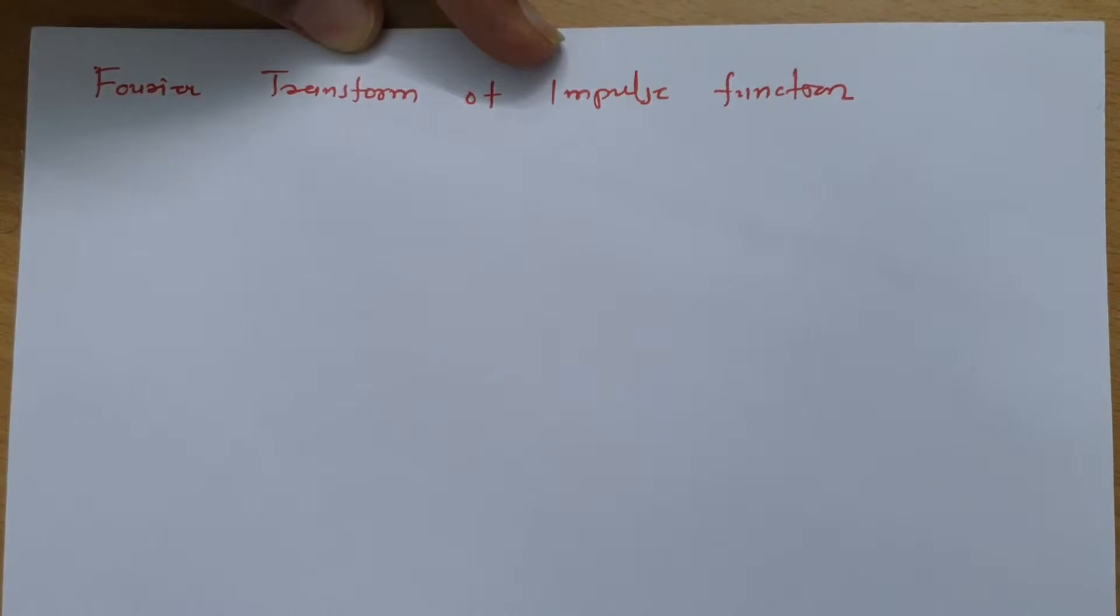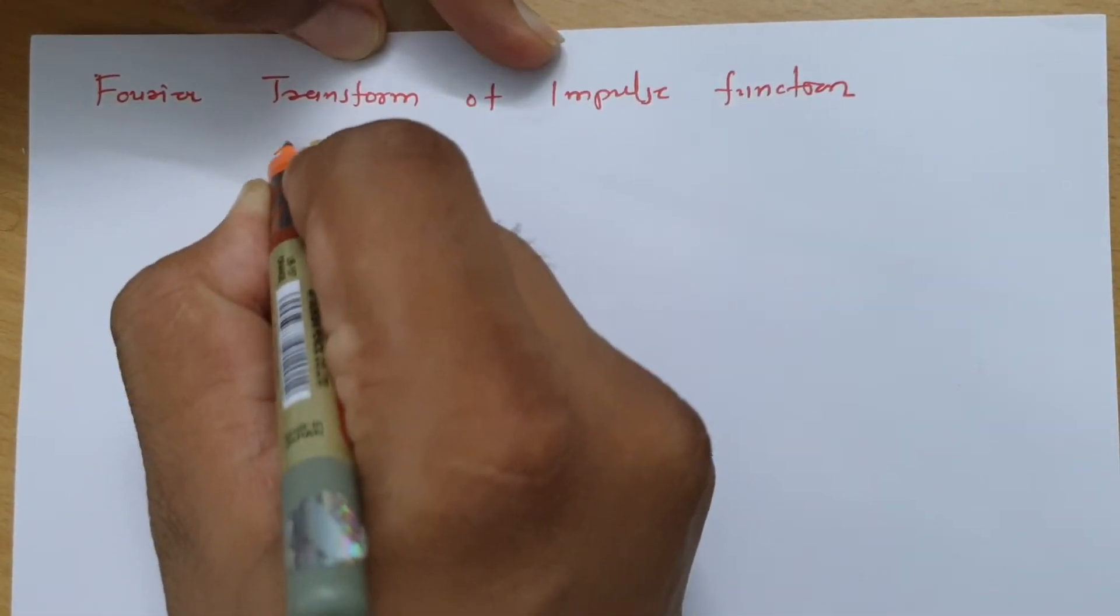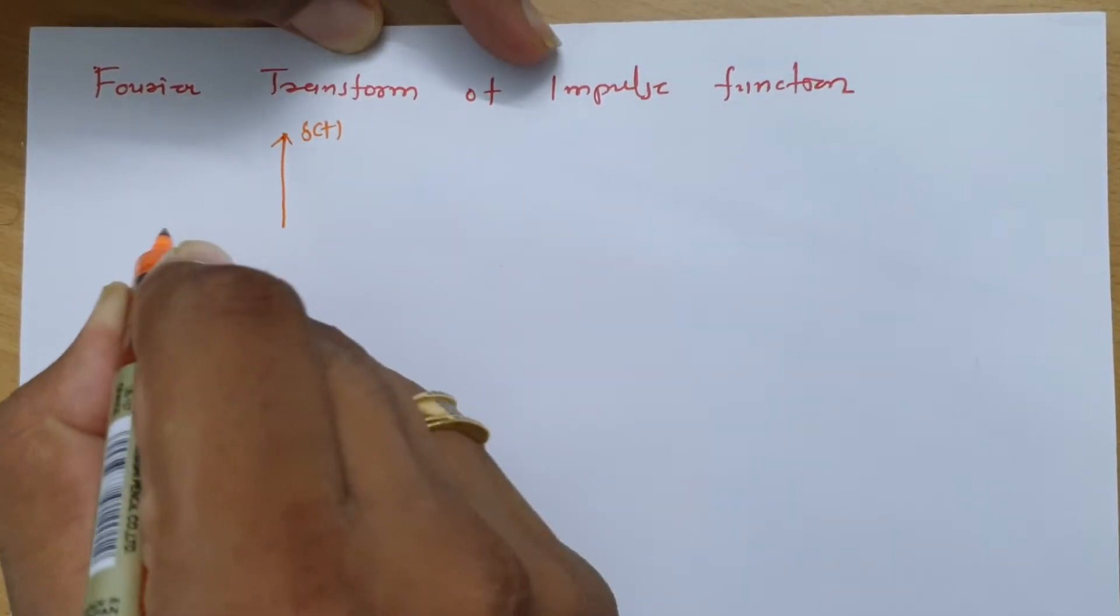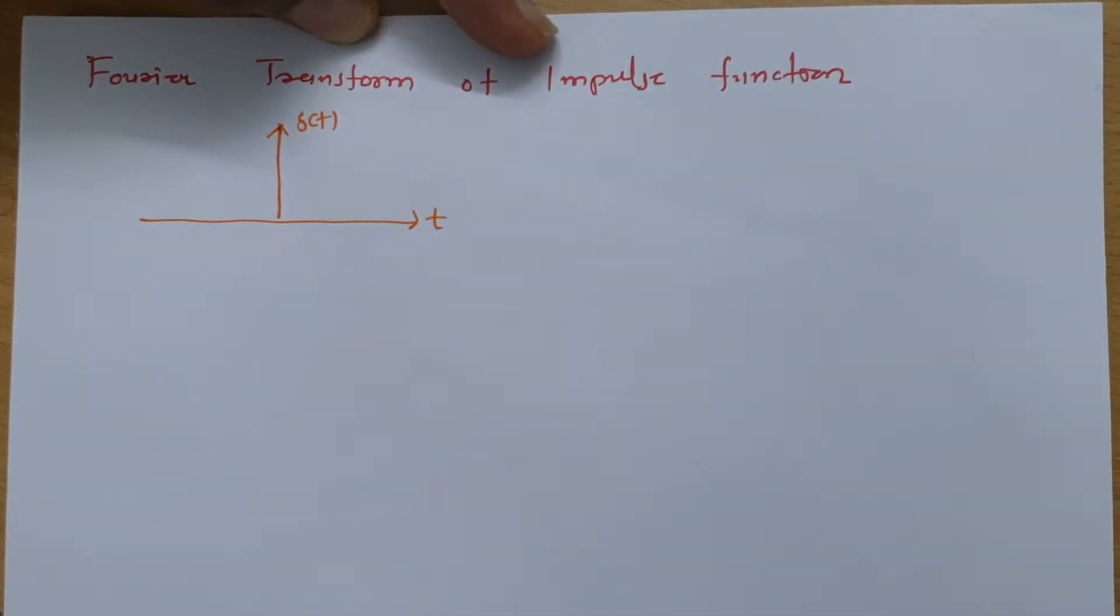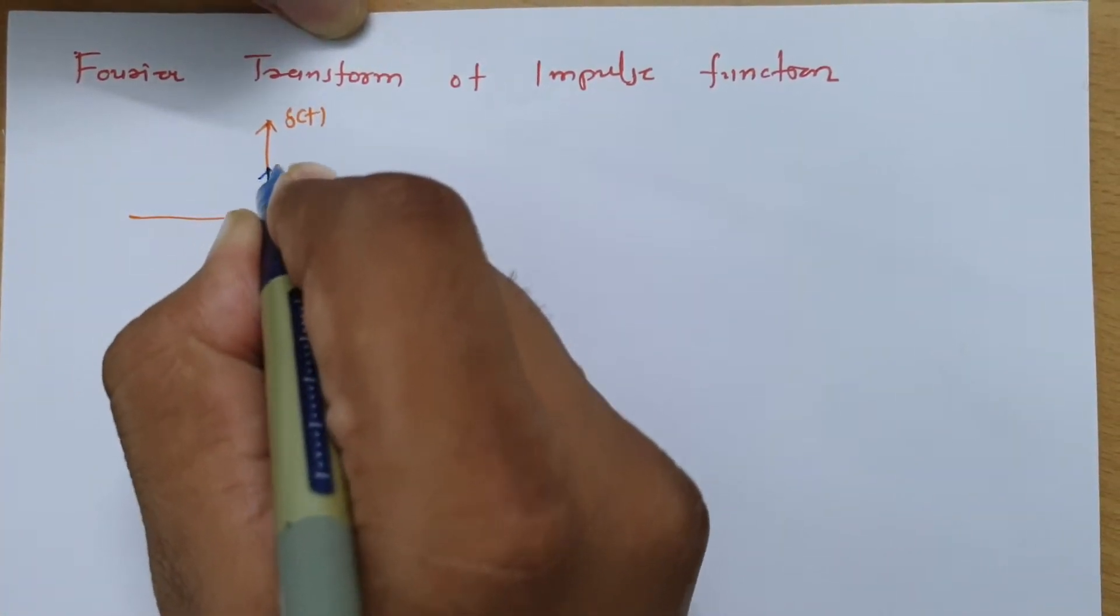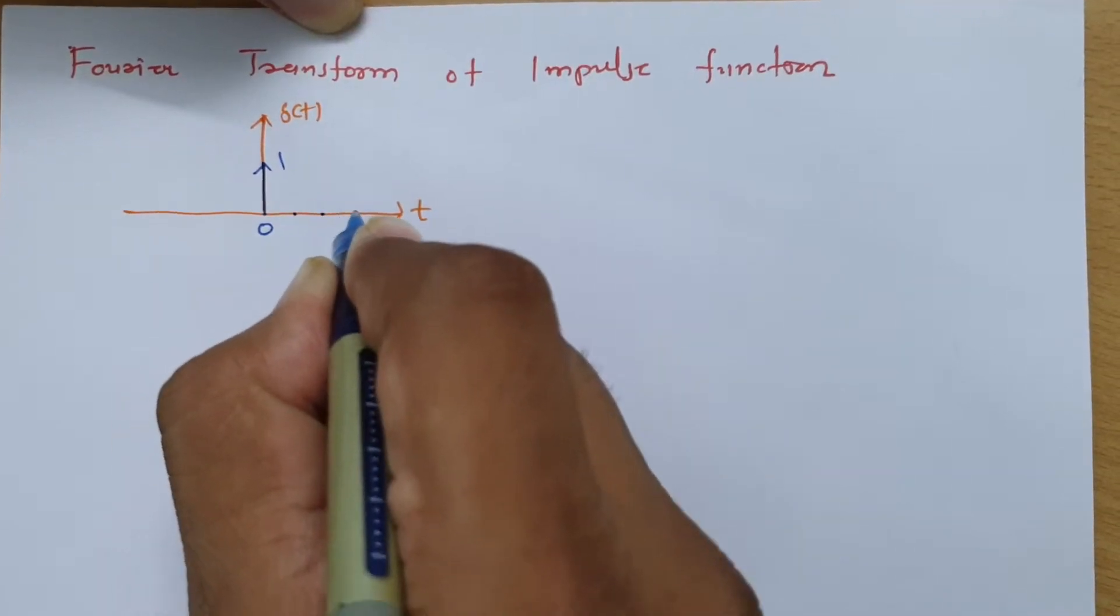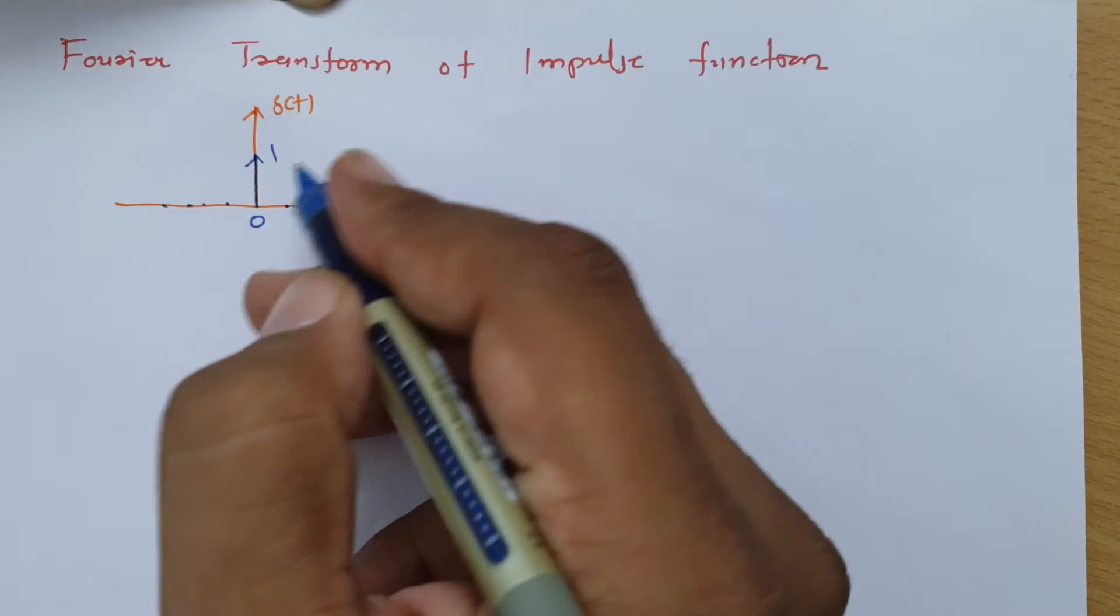So let me define impulse function first. If you observe impulse function noted by delta t and if you see its value varying with respect to time, then at t equals 0, it is having impulse and for other values, its value is 0. So this is what impulse function.